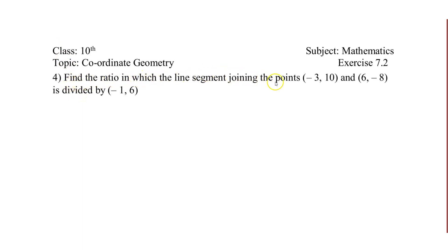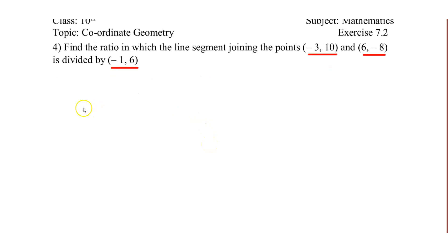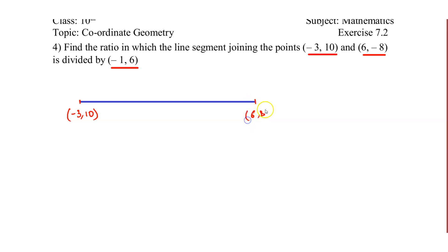Find the ratio in which the line segment joining the points (-3, 10) and (6, -8) is divided by the point (-1, 6). The first point is (-3, 10), the second point is (6, -8), and the dividing point is (-1, 6). The ratio m1 to m2 is what we have to find.